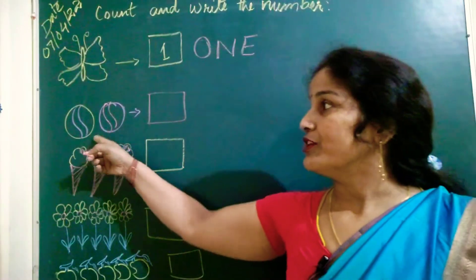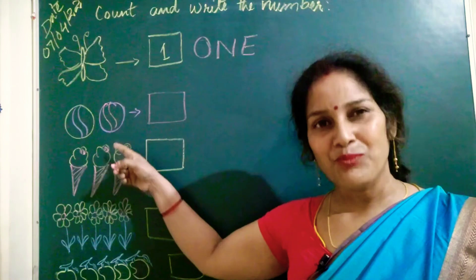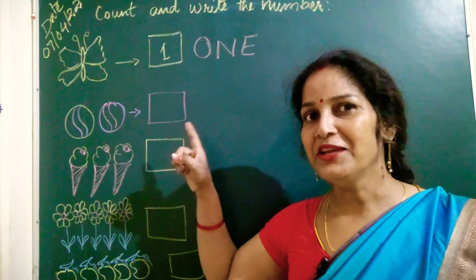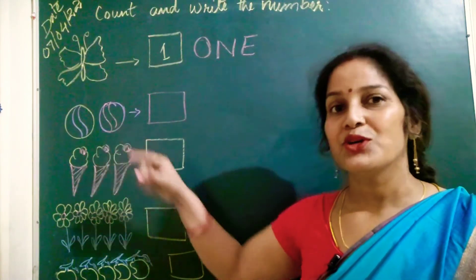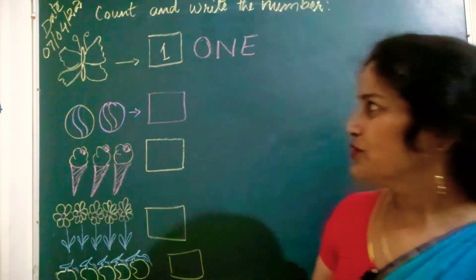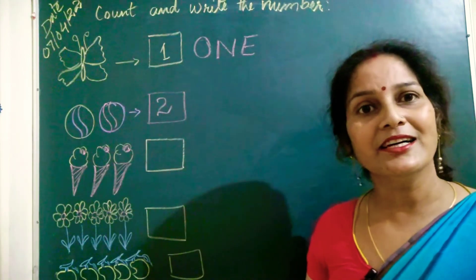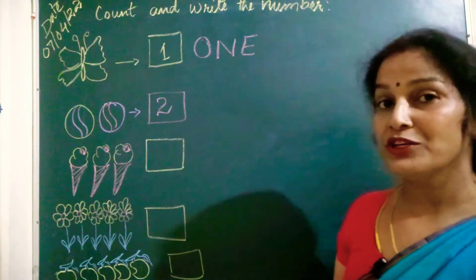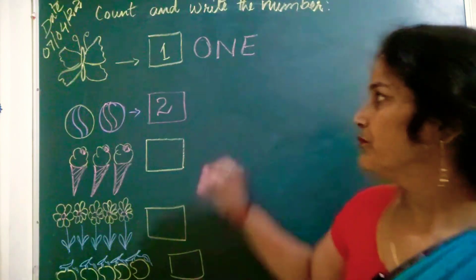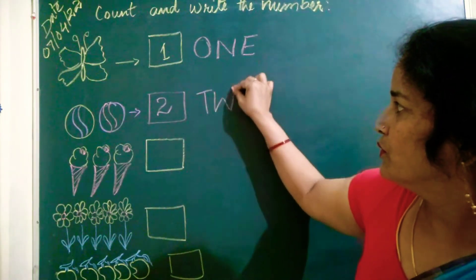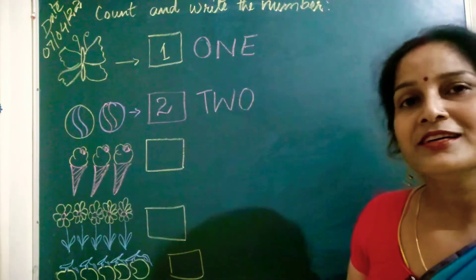Now what is this? Ball. So how many balls are here? How many? One. Two. So how many balls? Two balls. So I will write here two. So what will be the spelling of two? T. W. O. Two.